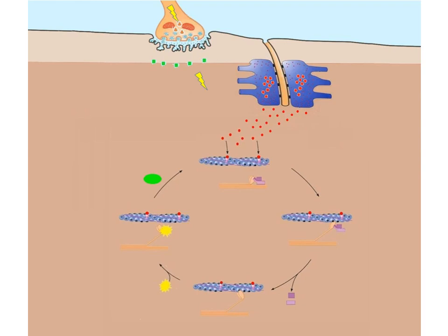The newly created action potential travels along the sarcolemma and into the T-tubule. From the T-tubule, the action potential travels into the terminal cisternae and stimulates the opening of voltage-gated calcium ion channels, allowing calcium ions to diffuse out into the sarcomere. If more calcium ions are needed, the sarcoplasmic reticulum will release calcium into the terminal cisternae. In the sarcomere, calcium seeks out troponin on the actin myofilament. When calcium binds to troponin, troponin changes configuration and pulls on tropomyosin, exposing the active binding site of G-actin, allowing the myosin head to bind.